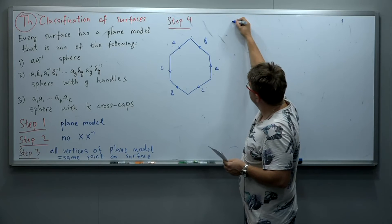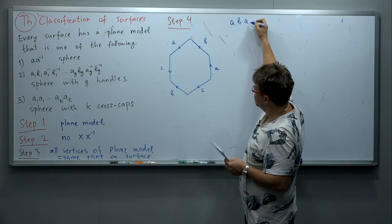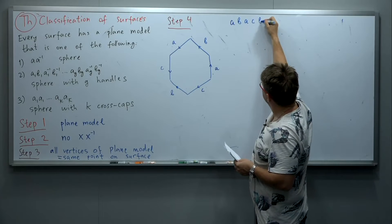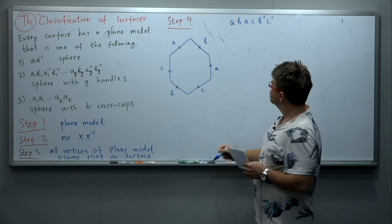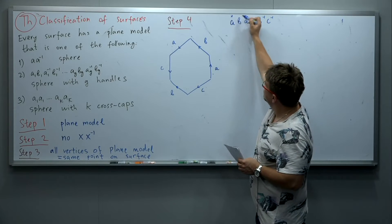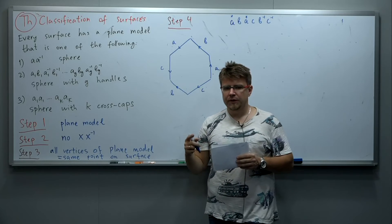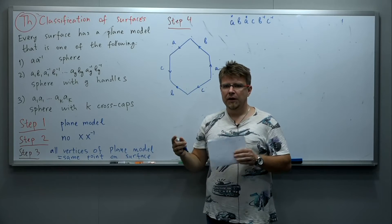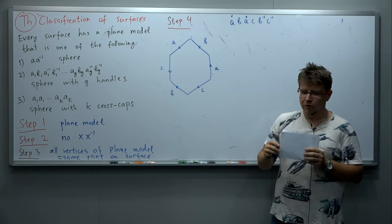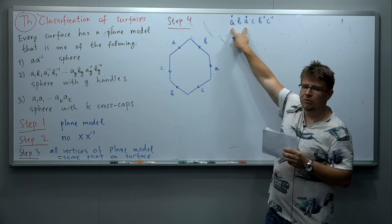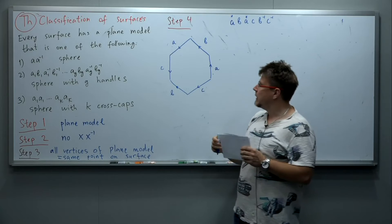In other words, the plane model that we have is A, B, A, C, B inverse, C inverse. Now, in this plane model we have two copies of A, and the purpose of the fourth step is to rearrange the plane model so that the two labels A are next to each other. Let me show you how it works.